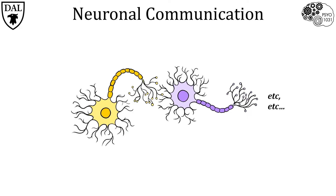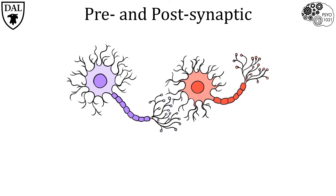This continuous cycle of communication is running all the time in your nervous system. For this tricky topic, we'll focus on the events at the synapse and learn how synaptic transmission plays a role in neuronal communication. We're going to start our journey to the synapse with a bird's eye view.